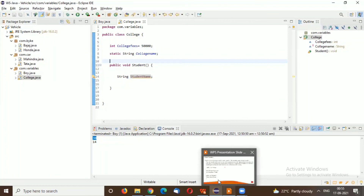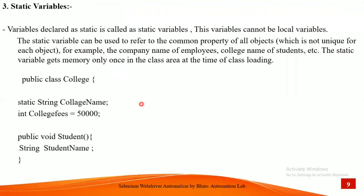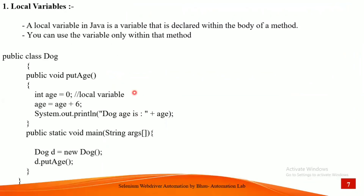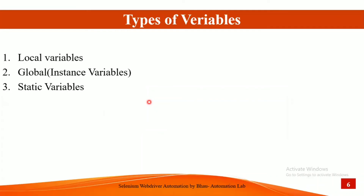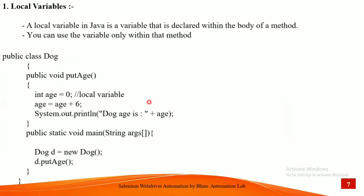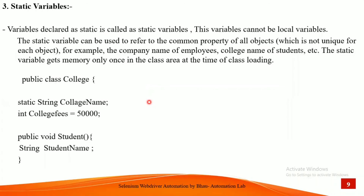I hope you all understand all the concepts — practically, theoretically, and conceptually. If you have any doubts, connect with me and I'll explain everything practically again. This is the concept of static variable, global variable, and local variable in Java. Practice by yourself with another example to understand local, global, and static variables clearly. We'll meet in lecture 7 with the next topic. Have a great day, bye!